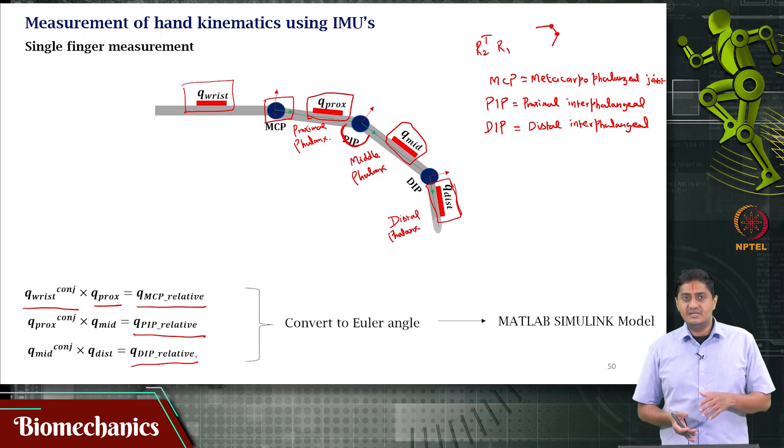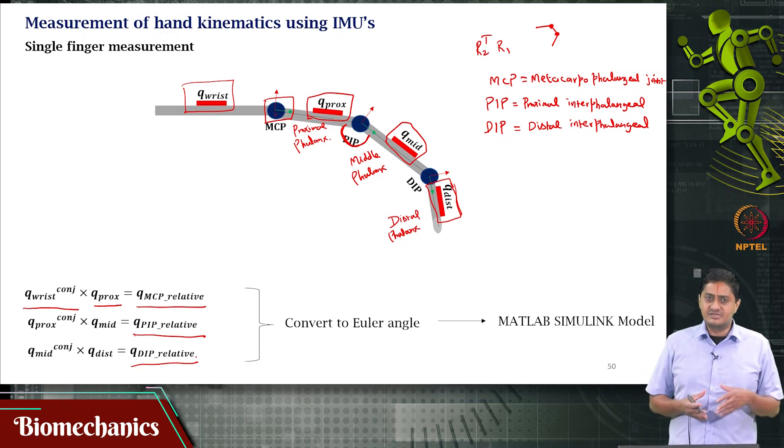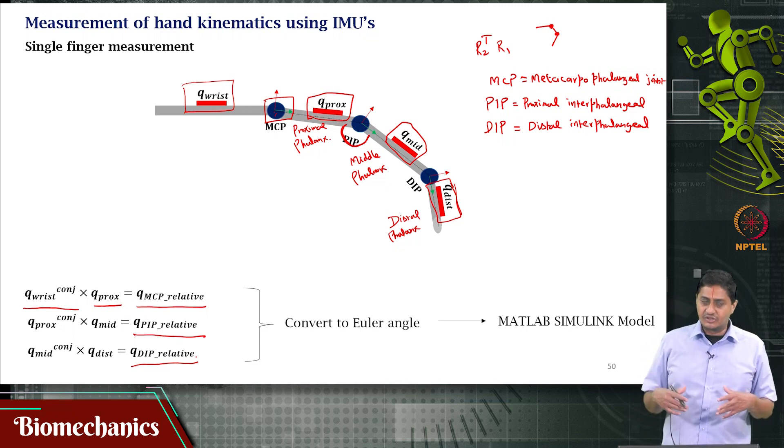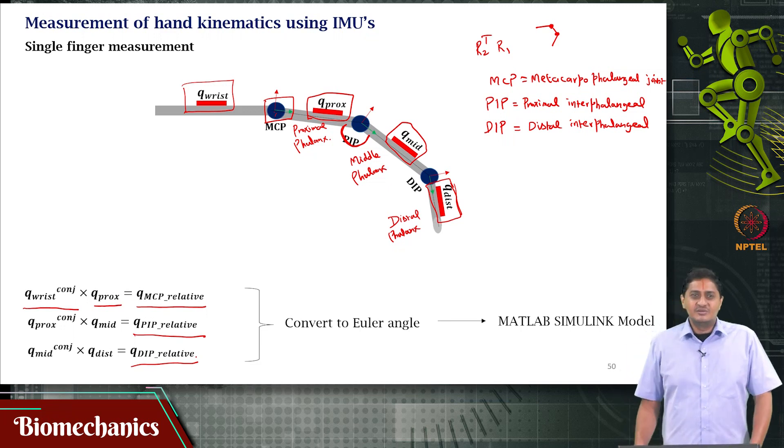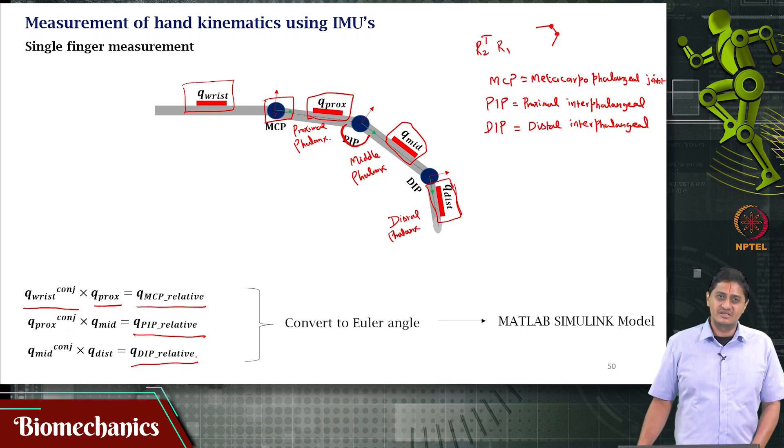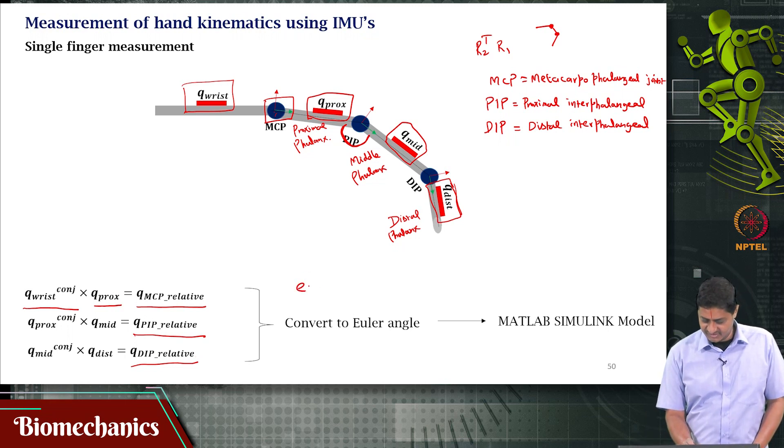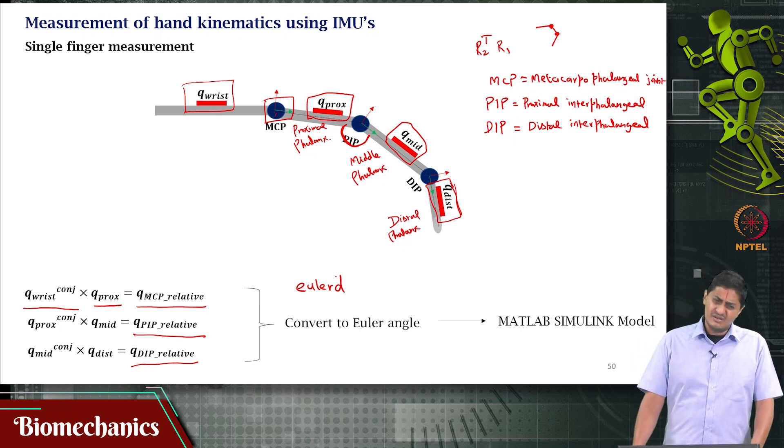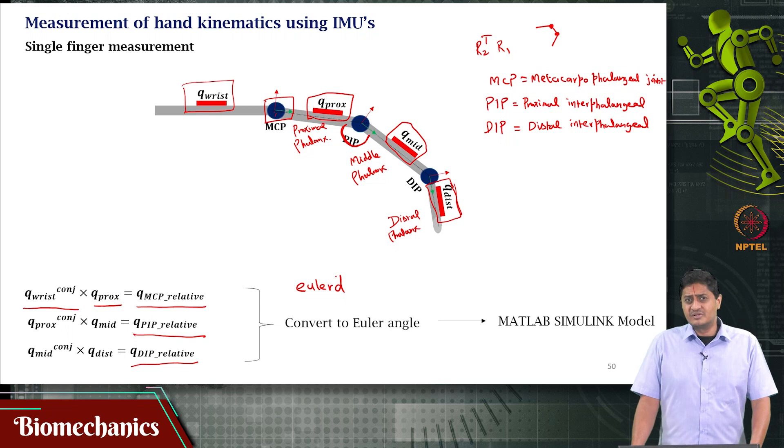There are straightforward methods to convert from this quaternion to Euler angles. You can develop the algorithm or simply use MATLAB. Remember in one of the previous videos, we used a specific function that converts from quaternions to Euler angles. In MATLAB, that's called EulerD. Check it. There are also algorithms you can use to develop your own code to convert from one to the other.